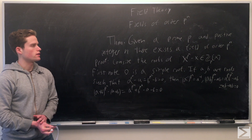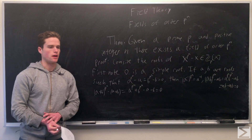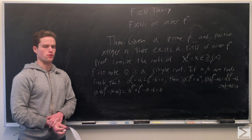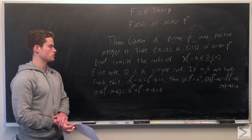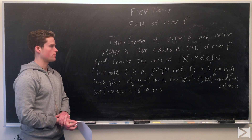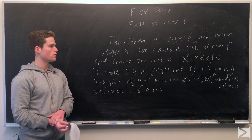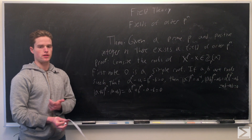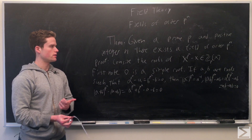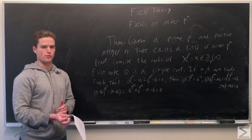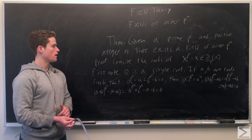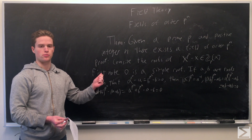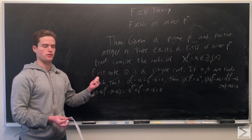We're going to prove that given any prime p and a positive integer n, we can find a field of order p^n. To do this, we're going to show the roots of x^(p^n) minus x — this polynomial in Z_p, the ring of polynomials over Z_p — in fact form our desired field.